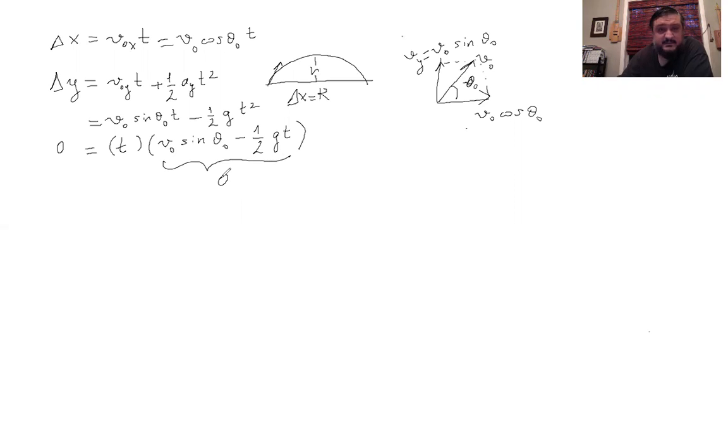We still do not know what T is, but it's okay. We have this other equation here, the Delta X equation, and we can solve for T. We can solve this equation for T and then plug that T into the second equation. Let's solve the other equation for T and then plug it in the first equation. So we're solving for R, remember? So R, which is Delta X is equal to V naught cosine theta naught times T.